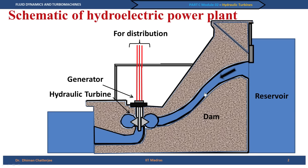As water flows from the duct, it comes to the turbine — this is called a penstock. Then the turbine blades will rotate. There is a generator connected at the top which converts this rotation into electric current, and then it goes out of the powerhouse for distribution. That is how we generate hydroelectricity.